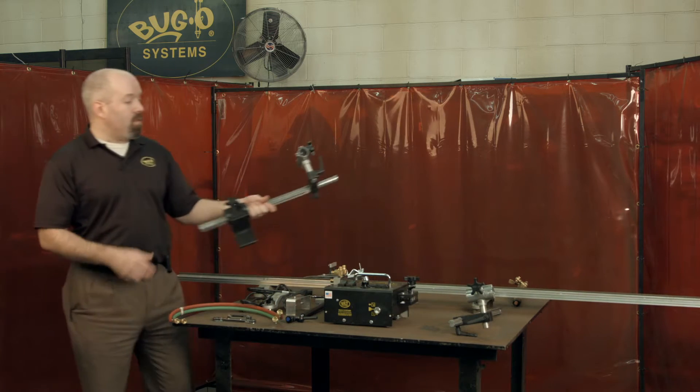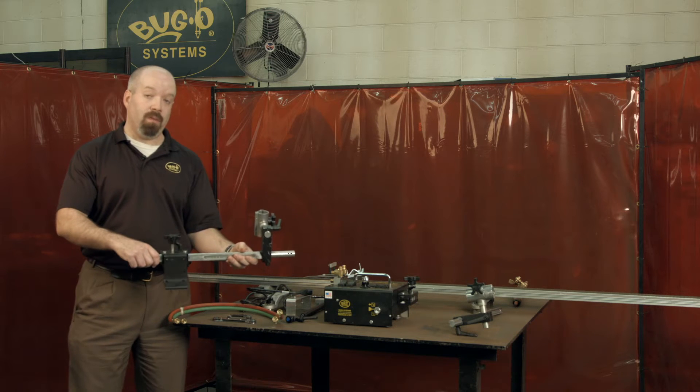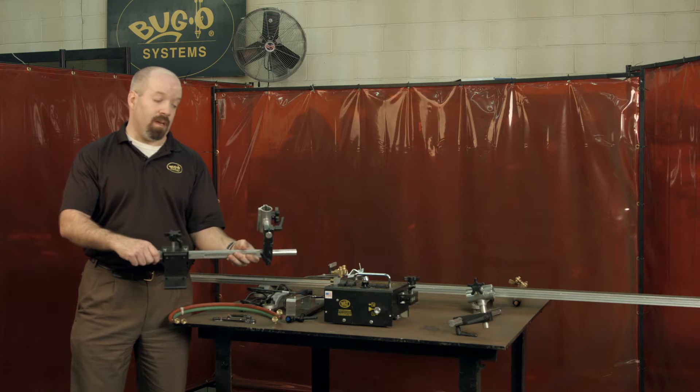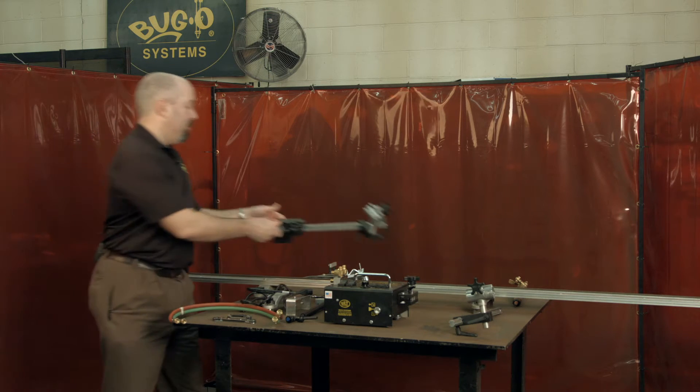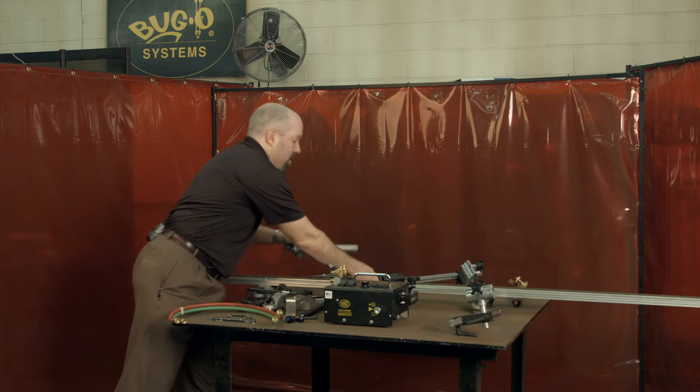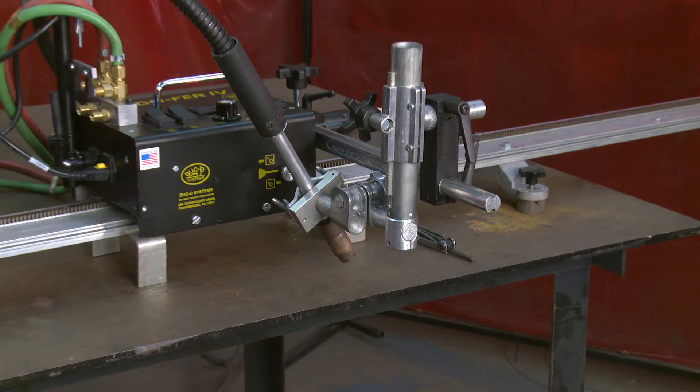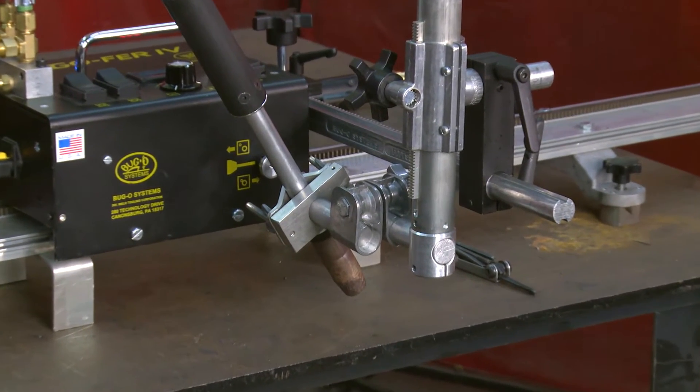There are also some additional accessories you can get. This machine can be configured to run with two different torches at the same time, and we also have an additional welding racking group to hold a standard welding torch for your welding needs.